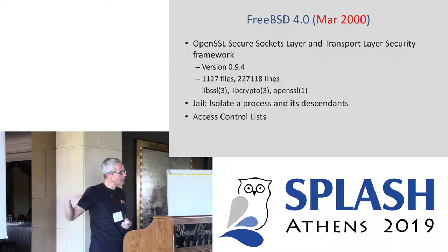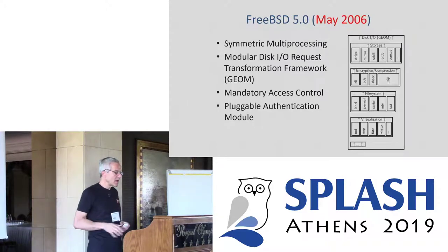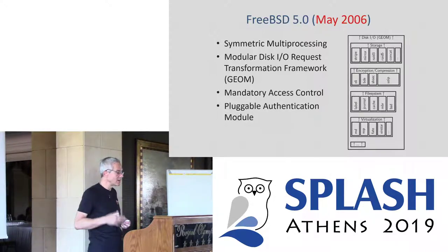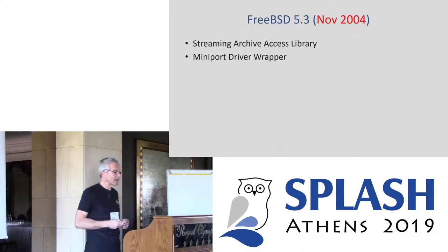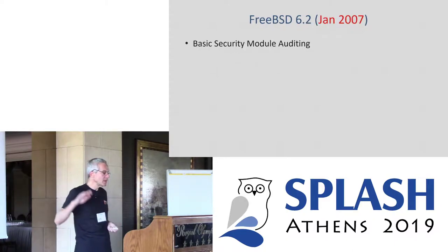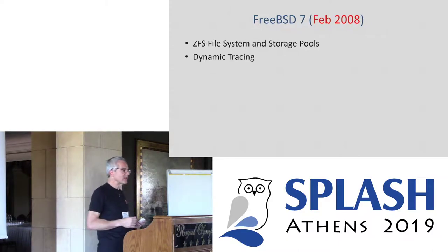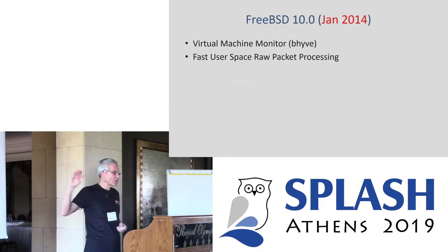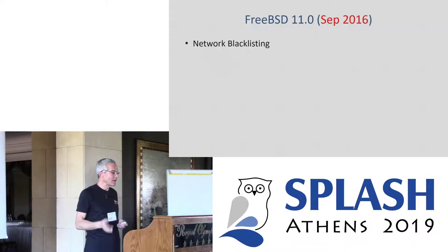Version 5.0 added GEOM — the geometry modular disk I/O request transformation framework. The kernel was radically restructured to move from a giant lock to offer symmetrical multiprocessing, and mandatory access control and pluggable authentication modules were added. Version 5.3 offered a streaming archive access library and a mini-port driver wrapper allowing drivers from Windows to run under FreeBSD. Version 6.2 added a security auditing module. Version 7 added ZFS — implemented by Sun in Solaris — and DTrace dynamic tracing. Version 9.0 brought paravirtualized I/O and InfiniBand support. Version 10 added a virtual machine monitor and fast user space handling. Version 11 added network blacklisting.